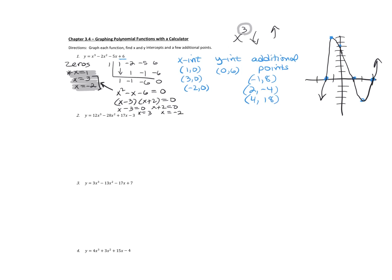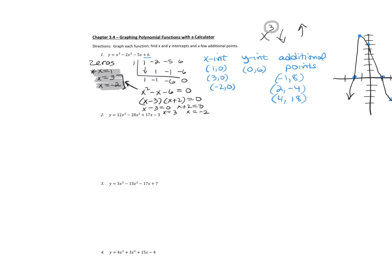Number two also has all rational answers. Go ahead and key in the polynomial function into the calculator, and then try to figure out which points on the x-axis are rational. I noticed there's one in between zero and one — it looks like it's about one third. I'll hit second and trace, pick option two for calculate zero, then use my left bound and right bound marks and hit enter for the guess. I found that it's 0.3 repeating, which is equal to one third.